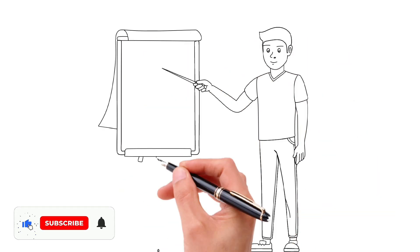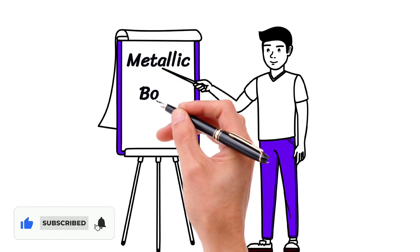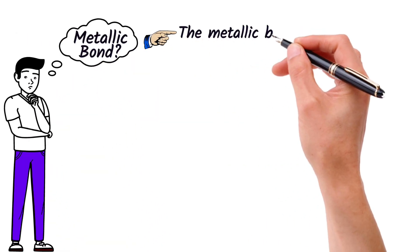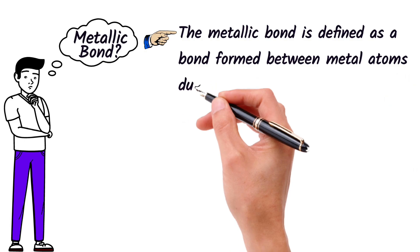In this fully animated lecture, I will teach you a type of chemical bond known as metallic bond. So what exactly is a metallic bond? It is a chemical bond formed between metal atoms due to mobile or free electrons.